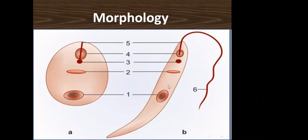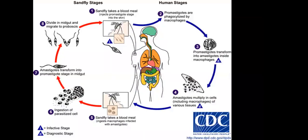Inside the insect, replication continues by binary division. The life cycle of haemoflagellates is a complex life cycle. For Leishmania — all three species (L. tropica, L. donovani, L. braziliensis) — the life cycle involves differentiation between cutaneous, visceral, and mucocutaneous leishmaniasis. The insect vector is the sand fly of genus Phlebotomus or Lutzomyia.